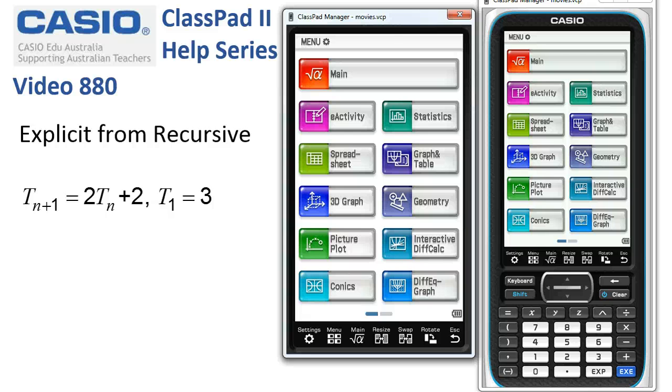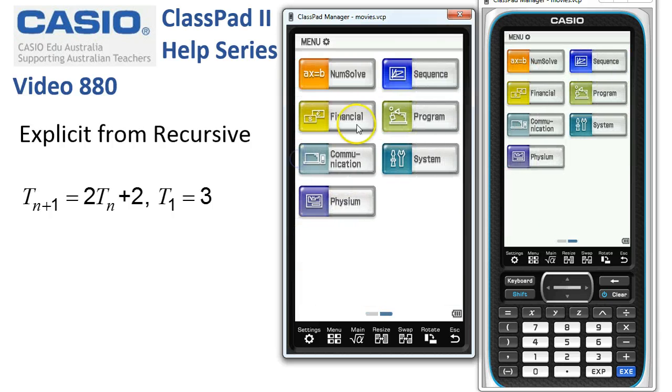Explicit rules from recursive rules. So we need to enter the sequence app. I'm just going to swipe over on my ClassPad. Here it is.